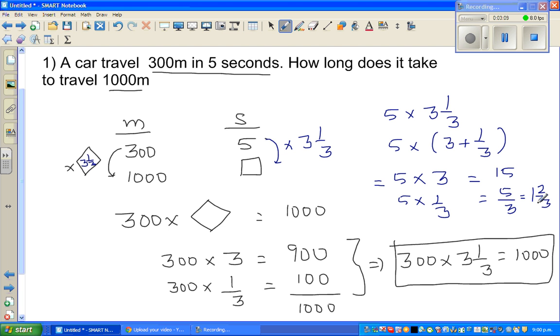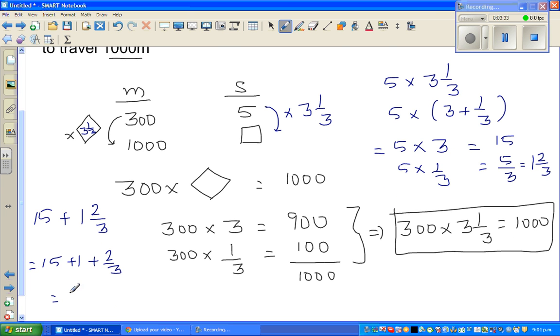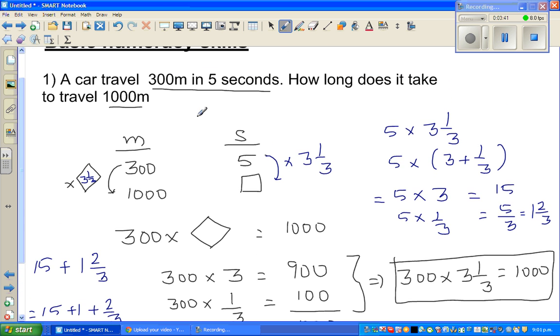5 thirds is 1 and 2 thirds. So 3 goes in 5 once, and so 5 thirds is 3 thirds plus 2 thirds. So this is 15 plus 1 and 2 thirds, which is 15 plus 1 plus 2 thirds. So you need 16 and 2 thirds seconds to be exact. To cover, if you're going the same speed, you need 16 and 2 thirds seconds.